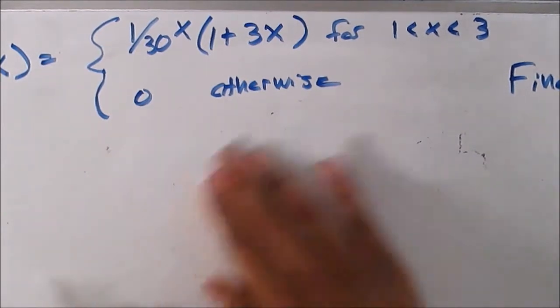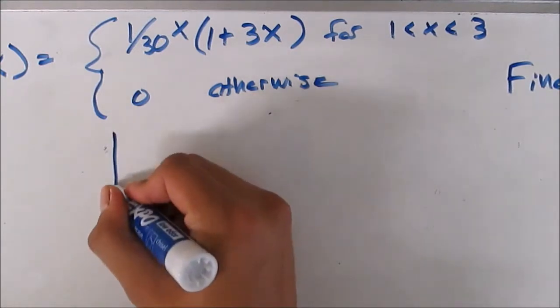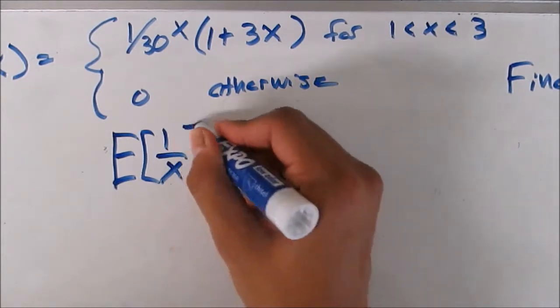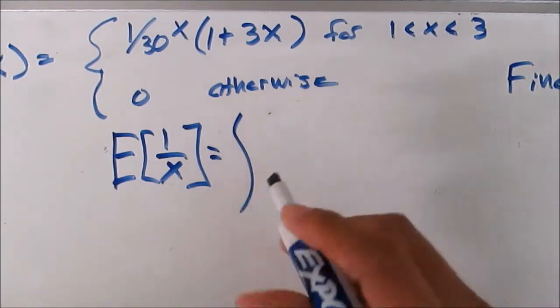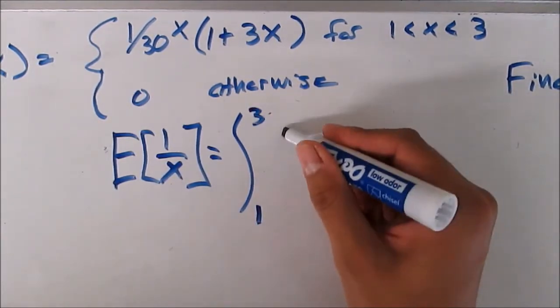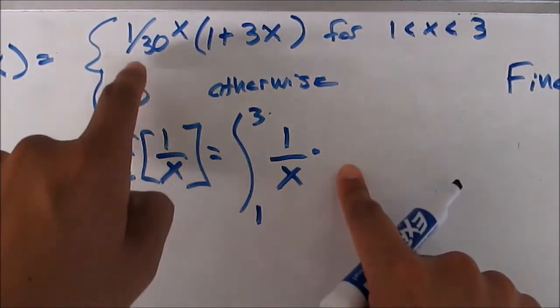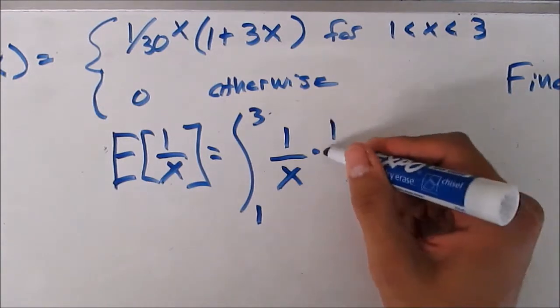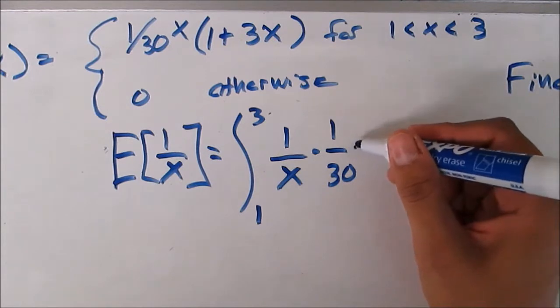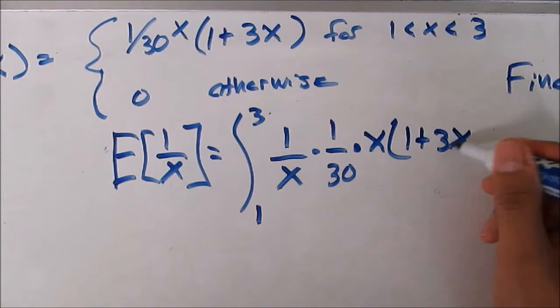So anyway, let's take a look at what this is going to come out to be. So the expected value of 1 over x, that's the integral and then remember it's from 1 to 3. And it's going to be 1 over x times the probability which is all of this so 1 over 30 and then times x 1 plus 3 x dx.